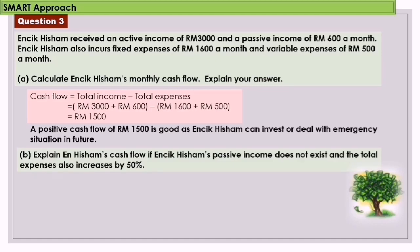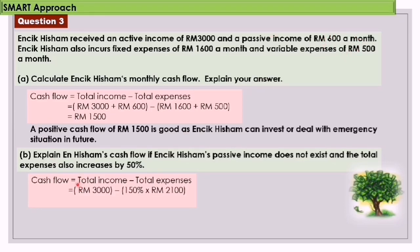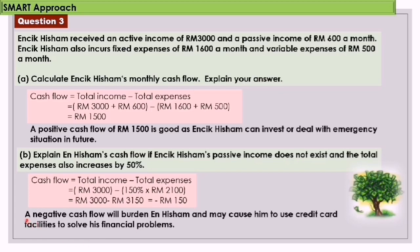Part B: Explain Inche Hisham's cash flow if his passive income does not exist and total expenses also increase by 50%. Cash flow equals total income minus total expenses. Total income: RM3,000. Total expenses: RM2,100 multiplied by 1.5 equals RM3,150. Cash flow: RM3,000 minus RM3,150 equals negative RM150. A negative cash flow will burden Inche Hisham and may cause him to use credit card facilities to solve his financial problems.